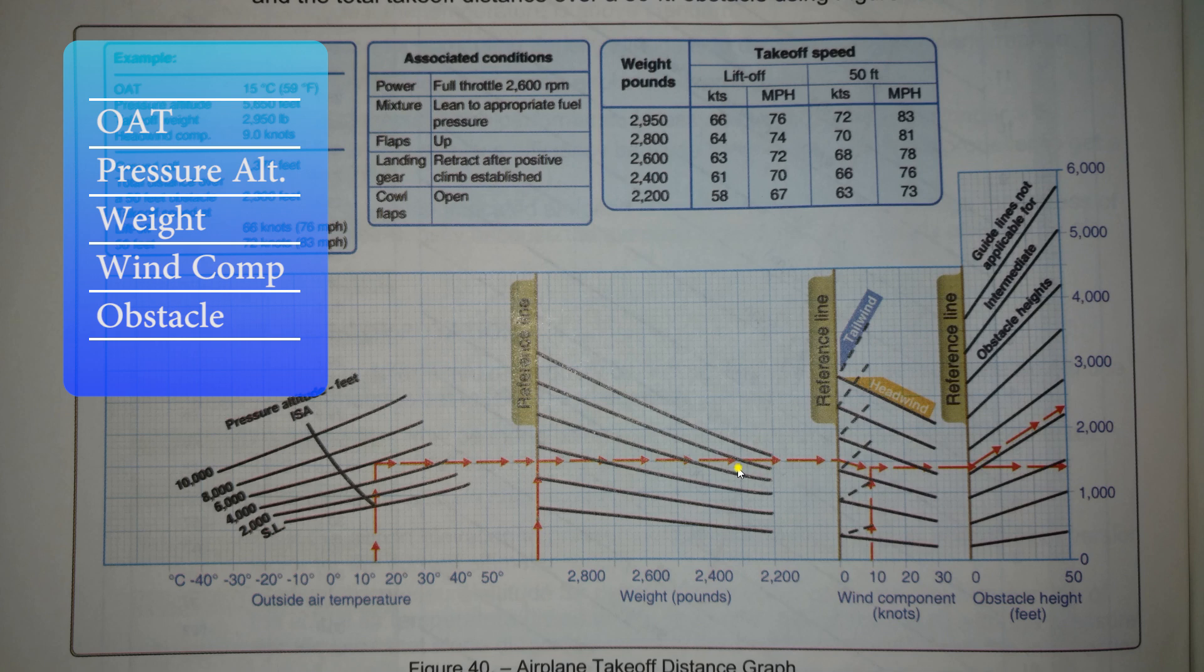Our example today is going to be that it's 20 degrees outside air temperature, and we have a 4,000 foot pressure altitude. So we set the altimeter to 29.92, and we got 4,000 feet on it. So 20 degrees, we're going to come up to 4,000 pressure altitude, and we hit that line and then move straight across. We intersect this next line here, and we're going to follow the trend lines down to our weight. Our weight today is 2,400 pounds. So we're following those trend lines down to 2,400 pounds.